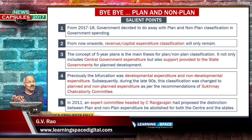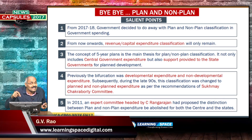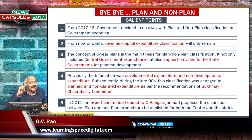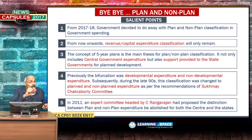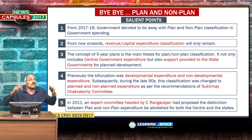Revenue expenditure does not create any assets; it is basically for day-to-day working and running the administration — like salaries and subsidies. These all come under revenue expenditure. For governments to create capital assets, a substantial portion of spending must be capital expenditure. Looking at world experience, this capital and revenue expenditure classification is more than sufficient.